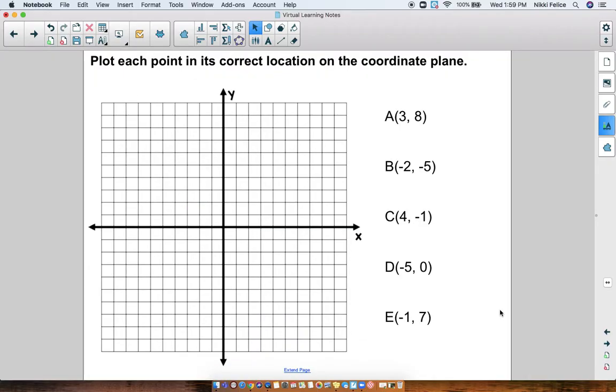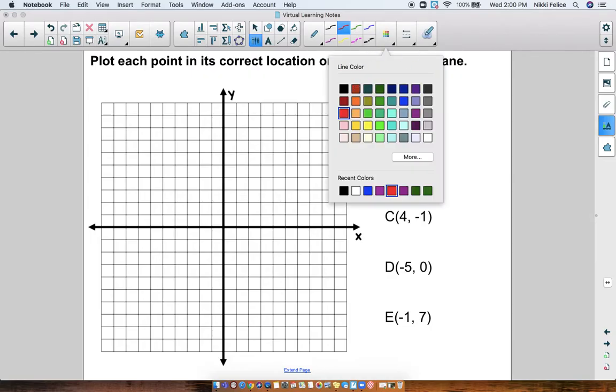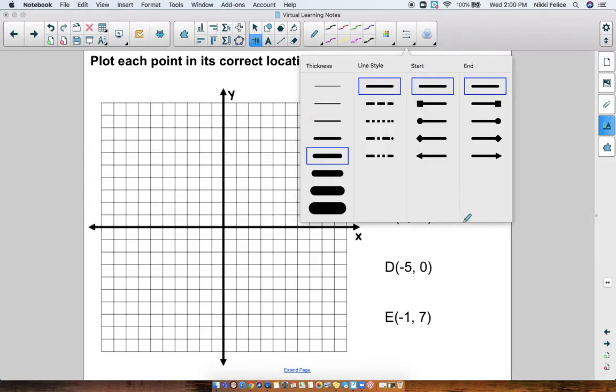So today we are going to go backwards. Instead of me giving you the points and you telling me what the ordered pair is, today I'm going to give you the ordered point, and you have to plot the point in the correct spot on the coordinate plane. So let's do a couple of them together. I'm going to grab my pen here.